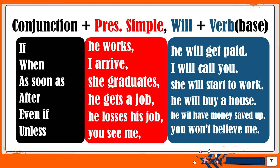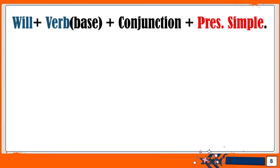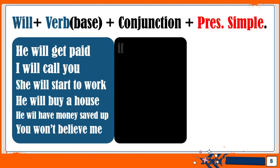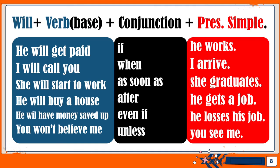There is another way of saying the same thing. We can put 'will' plus the base of the verb first, then the conjunction plus the present simple. For example: 'He will get paid if he works.' 'I will call you when I arrive.' 'She will start to work as soon as she graduates.' 'He will buy a house after he gets a job.' 'You won't believe me unless you see me.' Remember: if the conjunction is at the beginning — in the first clause — you need a comma before the second clause.